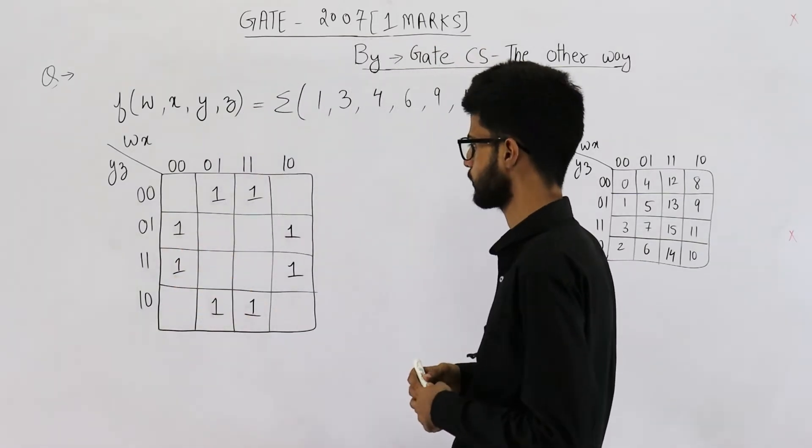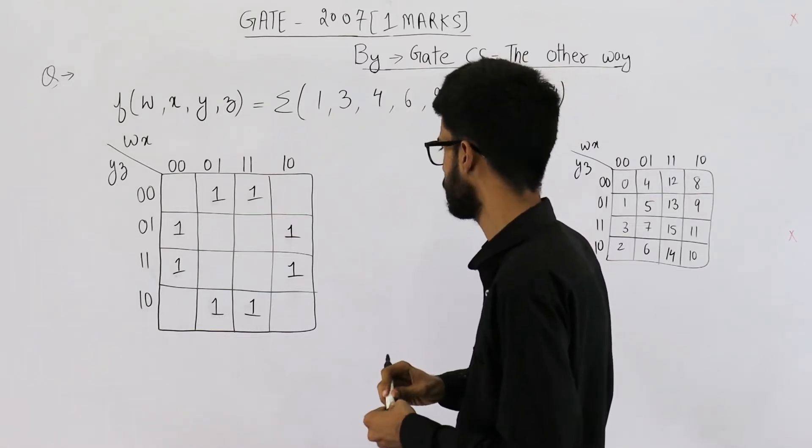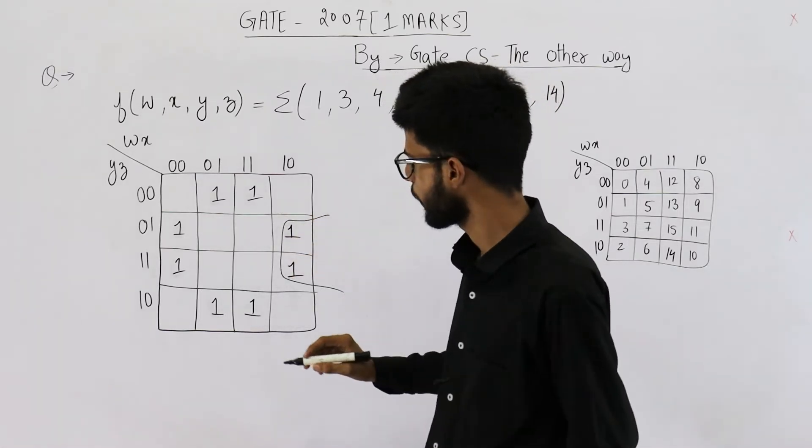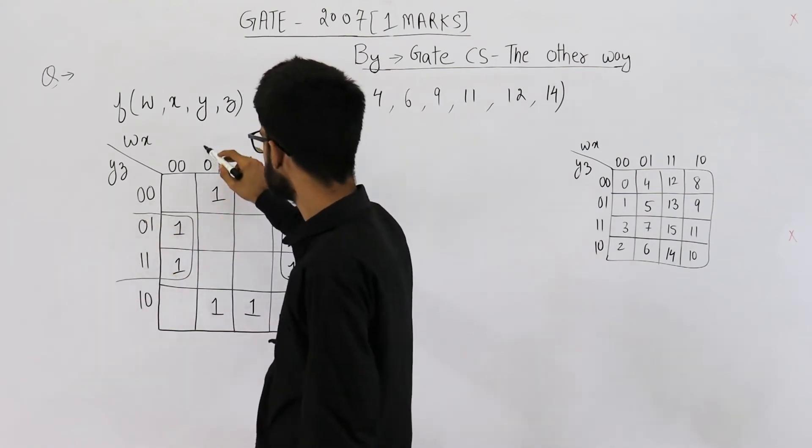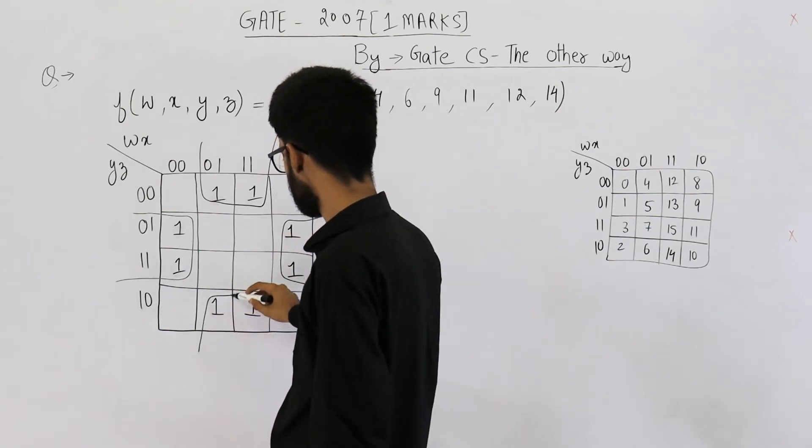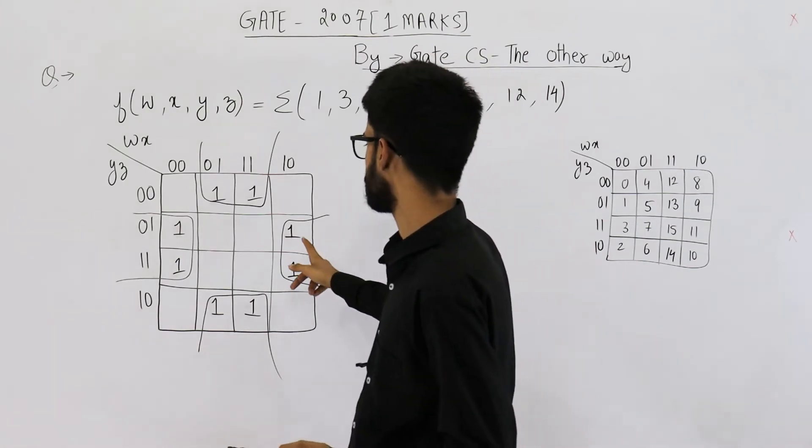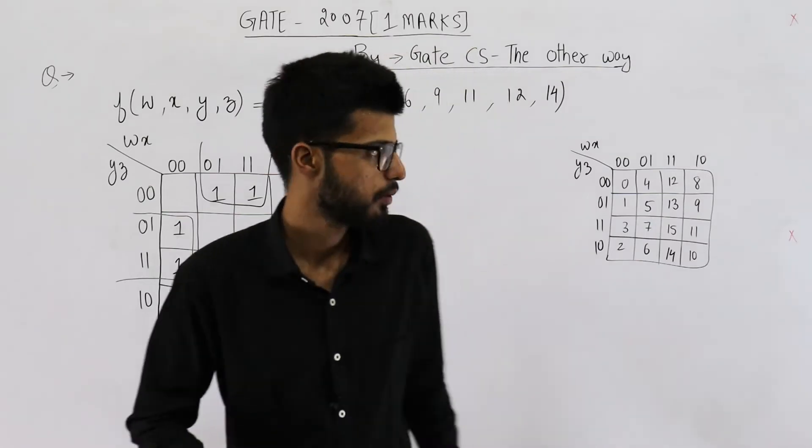Now we need to minimize this K-map. For that, let us make the groups, the prime implicants. You can see these two can be combined like this. And these two can be combined like this. Rather these four. These are all the groups. Rather, we only have two groups. One group is this and one group is this. Let us minimize it.